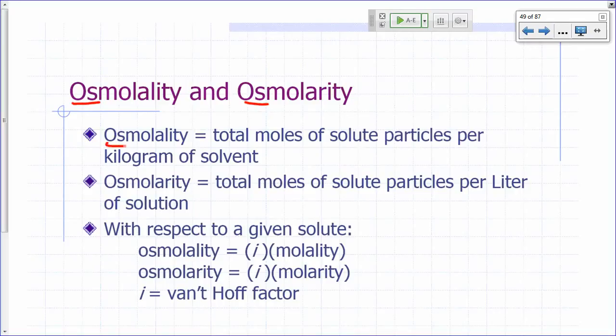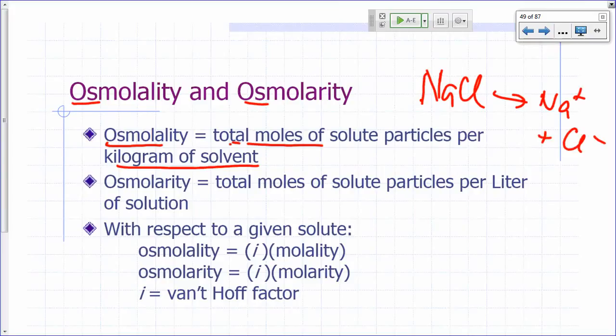Osmolality would just be the total moles of solid particles per kilogram of solvent. You recall, molality is mole solid per kilogram of solvent. So if you just want to count the particles separately, in other words, if you have sodium chloride, you know in water it's going to break up into sodium and fluoride ions, right? So when you're dealing with osmolality, you want the moles of the particles. So you're going to count the sodium separately from the chlorine and you can add them all up and that will give you your osmolality.